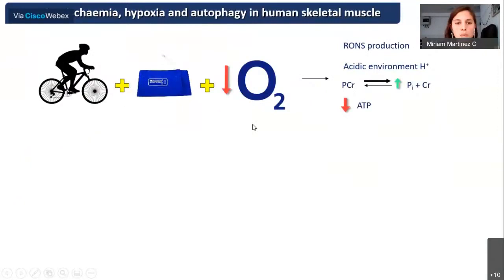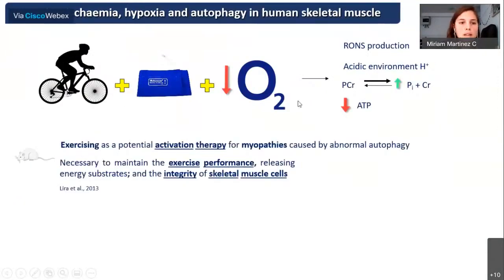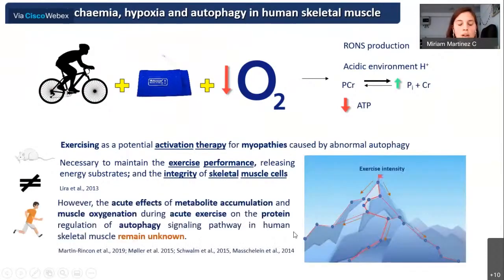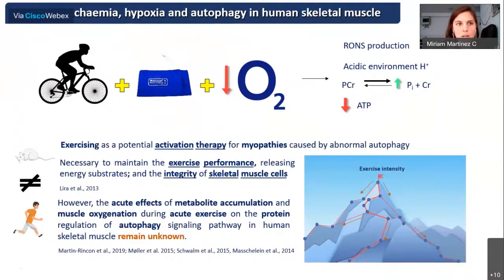Evidence in mice has shown that exercise can be a potential activator of autophagy, which is necessary to maintain performance and integrity of skeletal muscle cells. However, it remains unknown how exercise metabolite accumulation and muscle oxygenation regulate the autophagy pathway in human skeletal muscle.